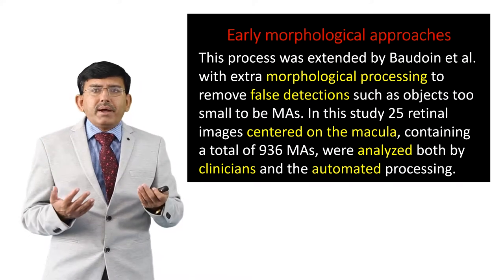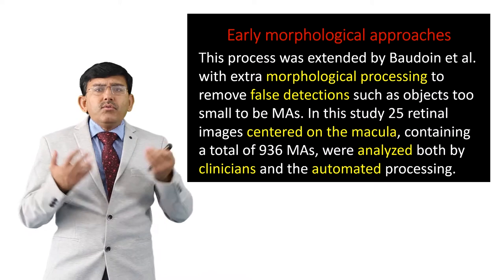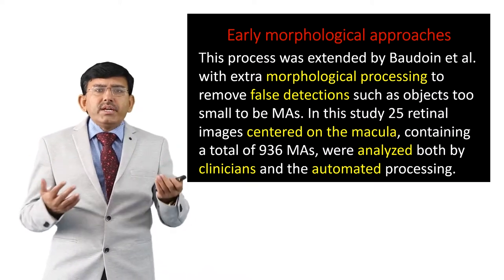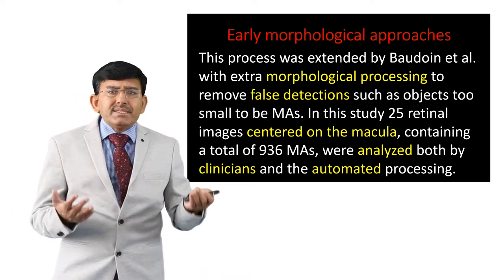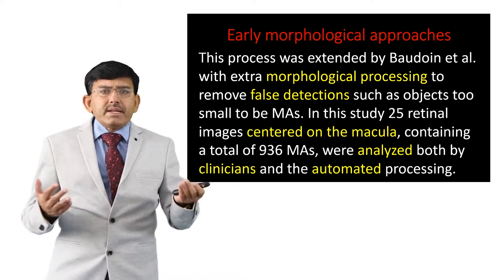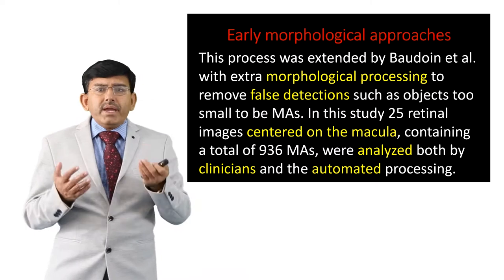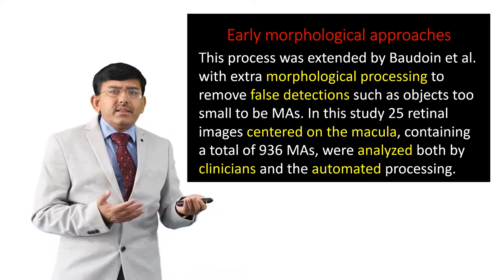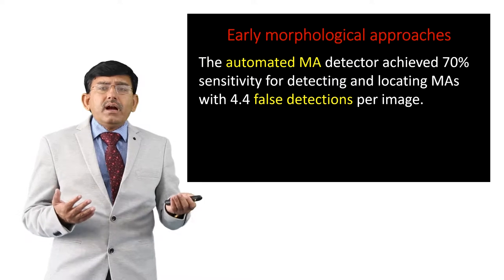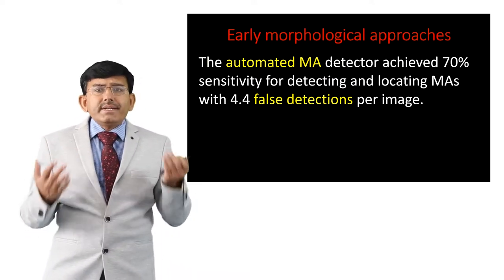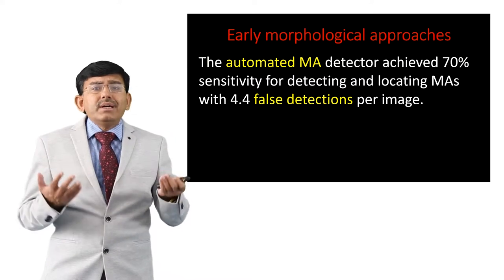This process was extended by Boudon and his team with extra morphological processing to remove false detections such as objects too small to be microaneurisms. In this study, 25 retinal images centered on the macula containing a total of 936 microaneurism lesions were analyzed by both clinicians and the automated system. The automated detector achieved 70% sensitivity with 4.4 false detections per image.